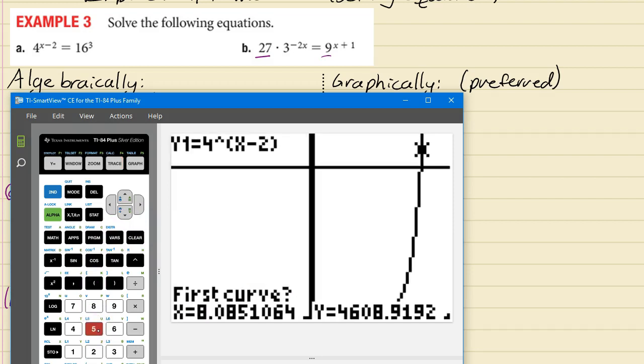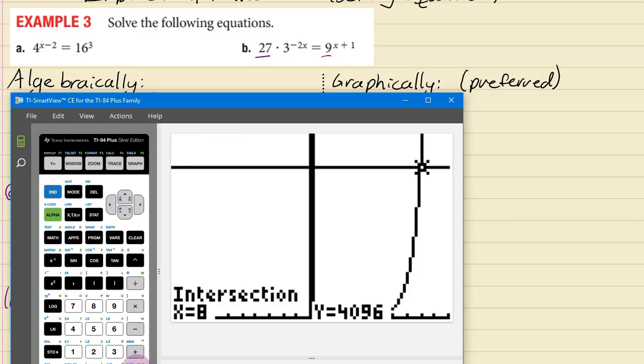And it asks for the first curve and the second curve. Always just press enter twice as long as you only have two equations graphed. So I only have two so I can just hit enter twice. Just move the cursor near the intersection for the guess and hit enter.